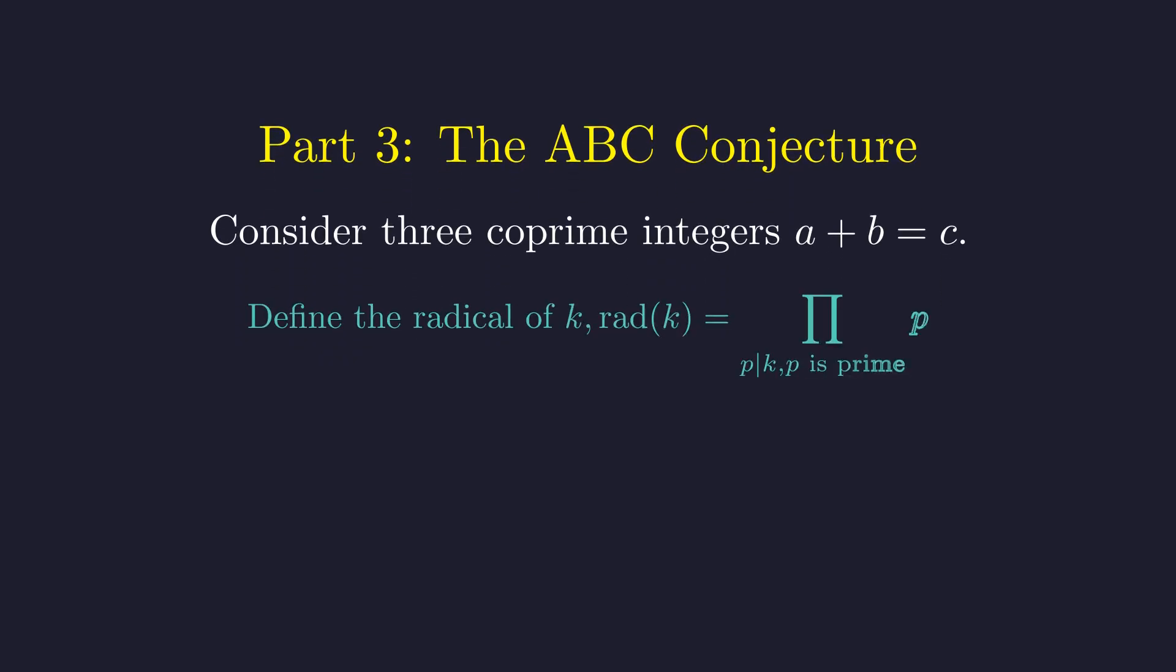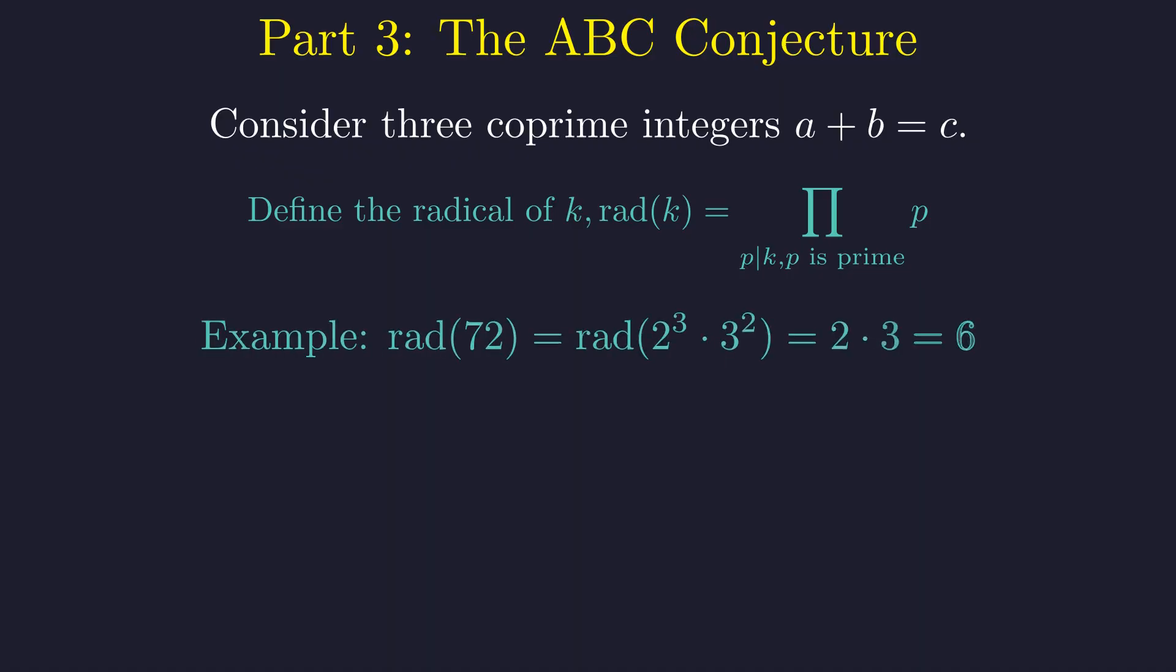Next, we define a concept called the radical. The radical of a number is the product of its distinct prime factors. You essentially ignore the exponents. For example, the prime factorization of 72 is 2 cubed times 3 squared. Its radical is just 2 times 3, which is 6.